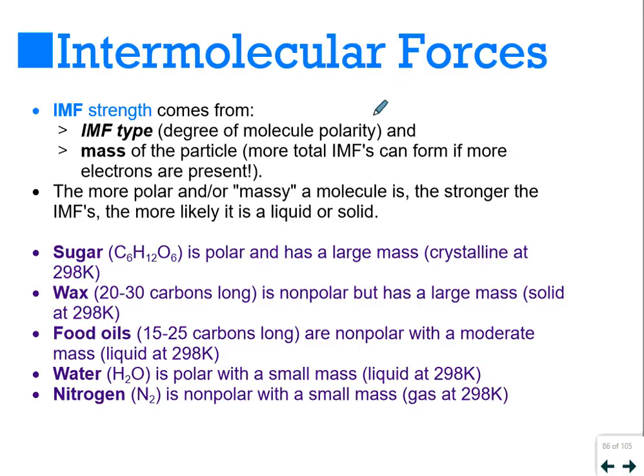IMF strength is a function of IMF type—whether it's polar—and the mass of the particle. The more polar and massive the molecule, the stronger the IMFs and the more likely it's liquid or solid. Five examples: Sugar, with relatively large mass, is polar and solid. Wax is 20 to 30 carbons long, nonpolar, but has large enough mass to be solid. Food oils are 15 to 25 carbons, nonpolar with moderate mass, usually liquid. Water is very polar with small mass, but because it's so polar, it's liquid. Water is unique—something with molar mass 18 being liquid is unusual. Nitrogen has similar mass to water but is nonpolar, so it's a gas.